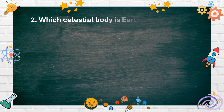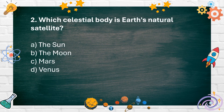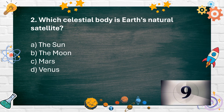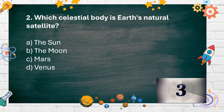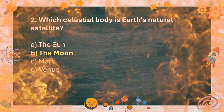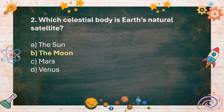Number 2. Which celestial body is Earth's natural satellite? A. The Sun, B. The Moon, C. Mars, D. Venus. The answer is B. The Moon.